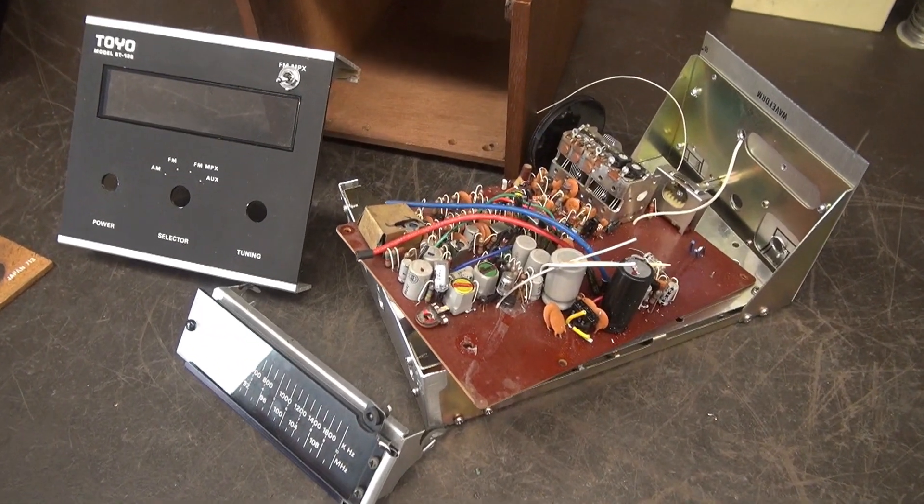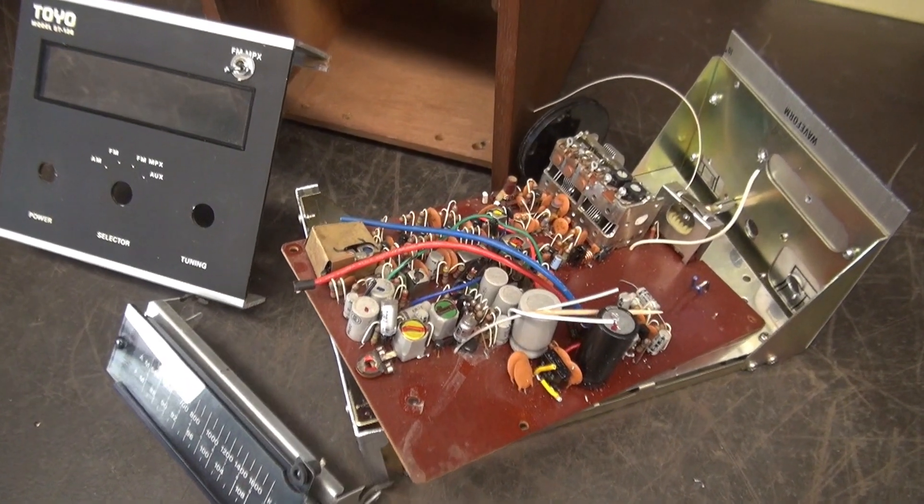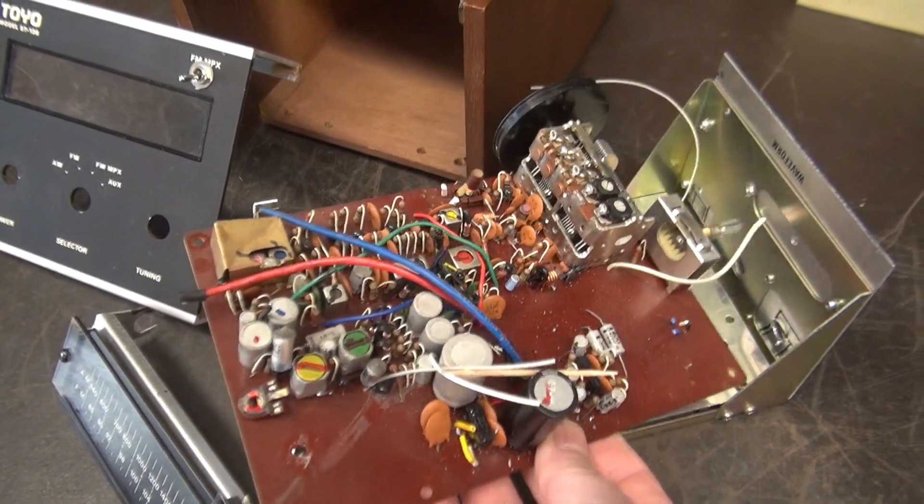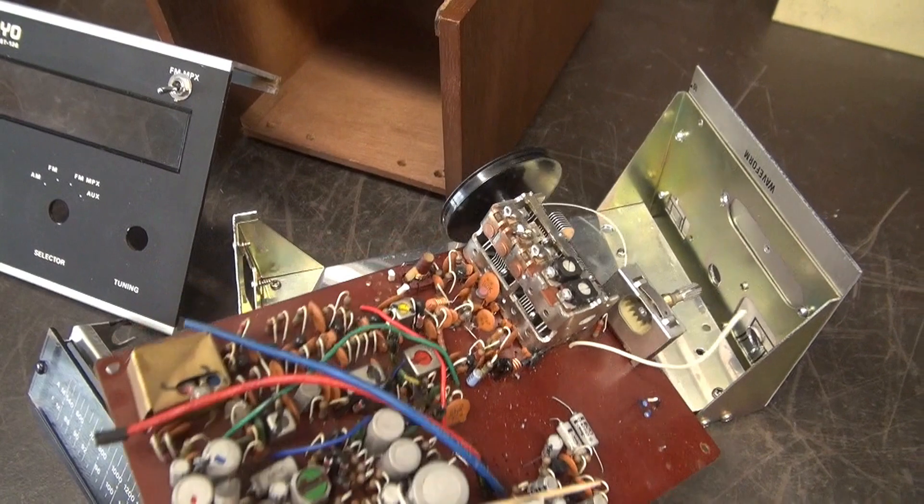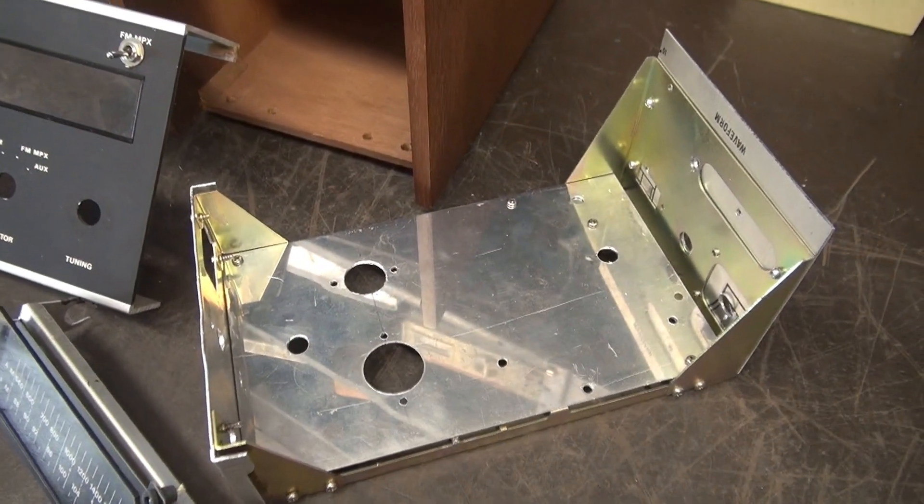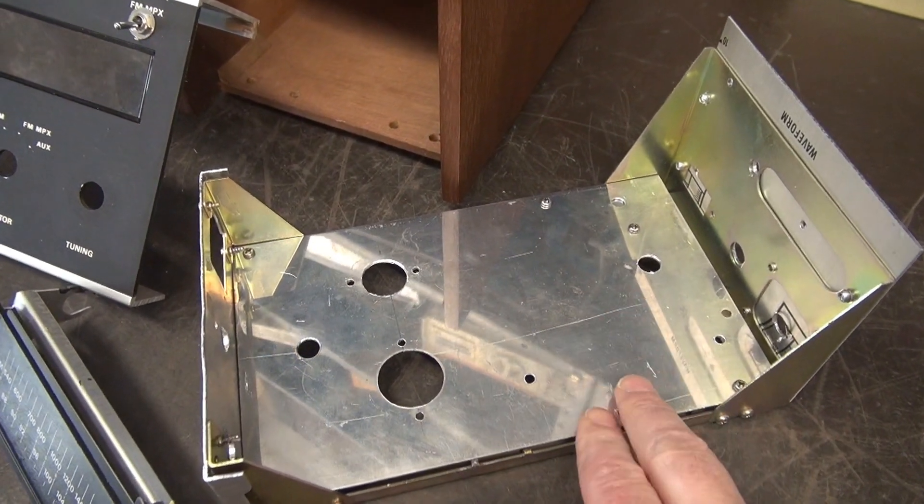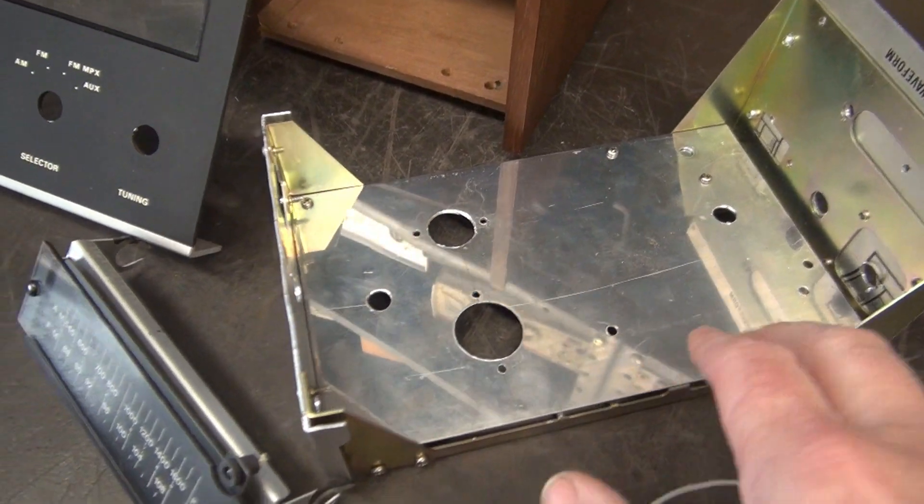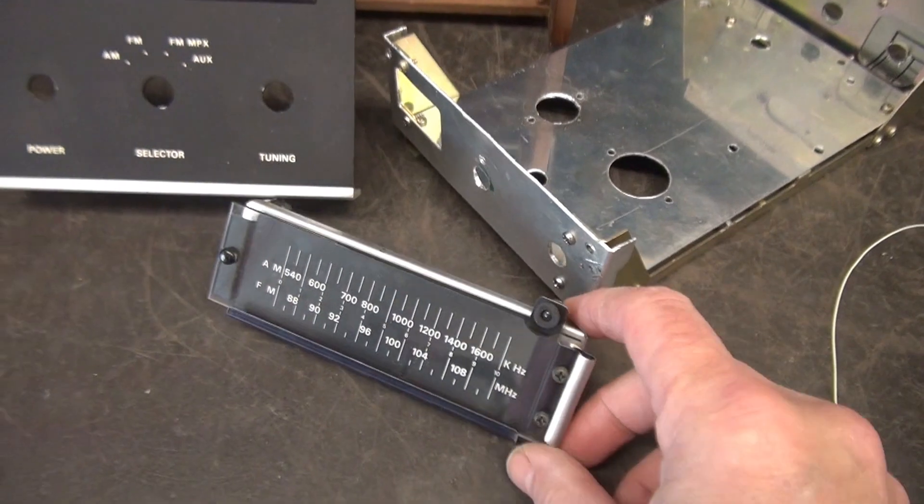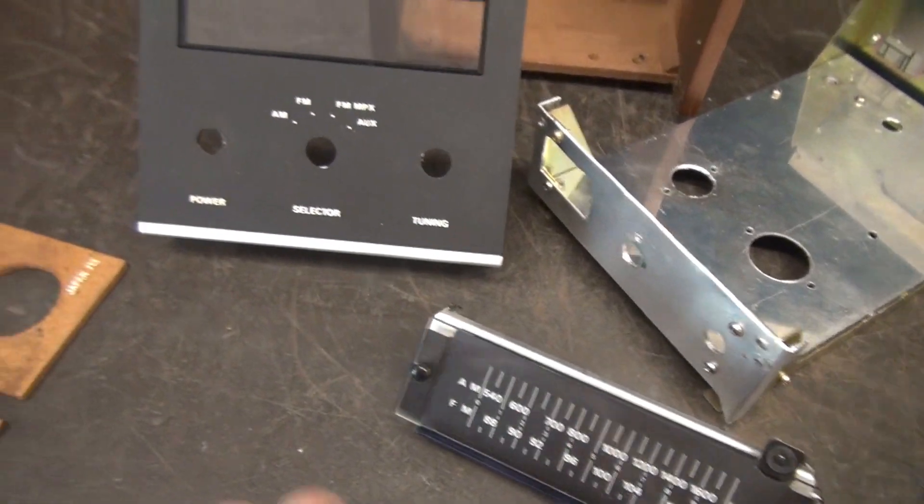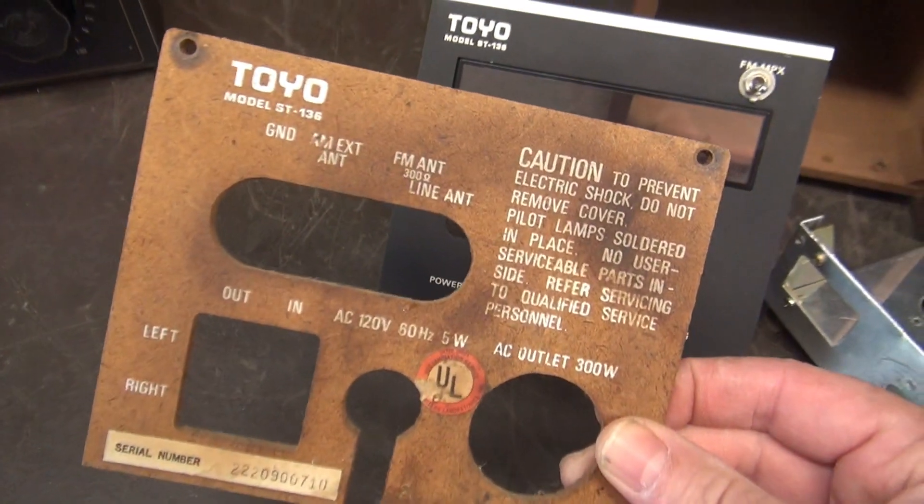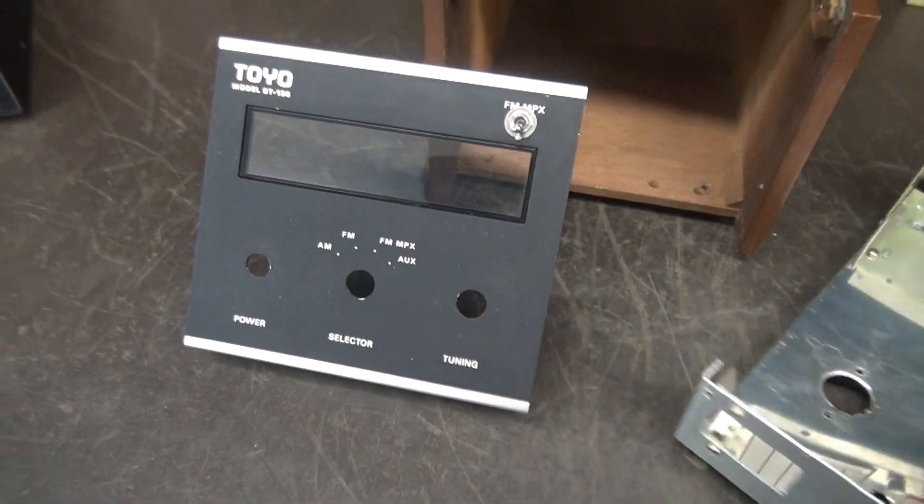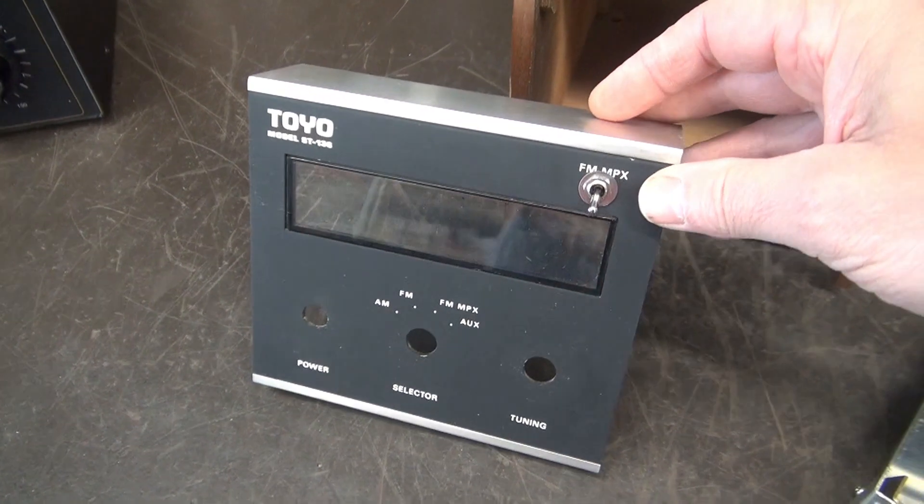As I stated, this started its life as an inexpensive AM-FM tuner. It had a circuit board that was mounted on this chassis. Now I have removed that. I've already put in a new subplate for the little Class A amp that's going to be installed. This was the original tuning dial and this was the rear panel. All that is going to the junk.